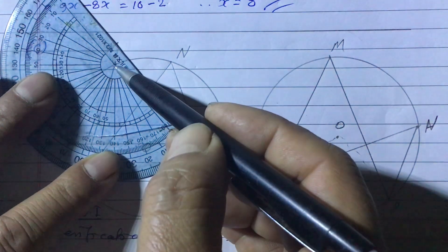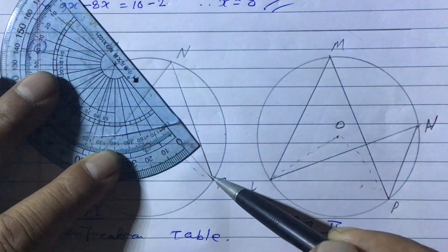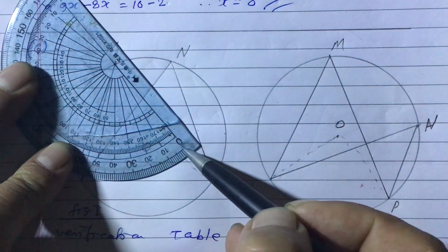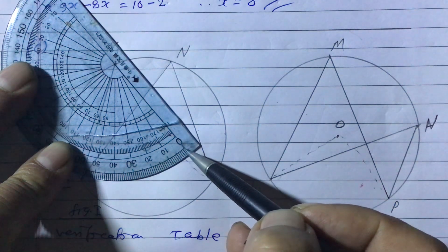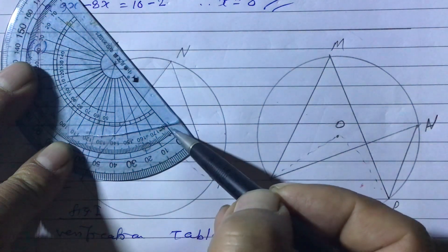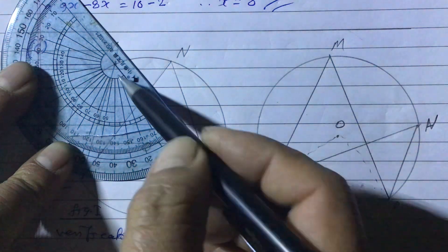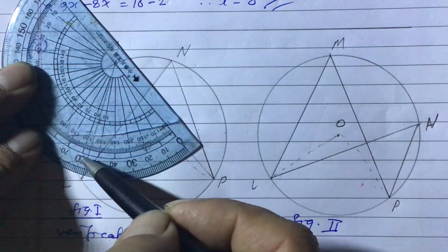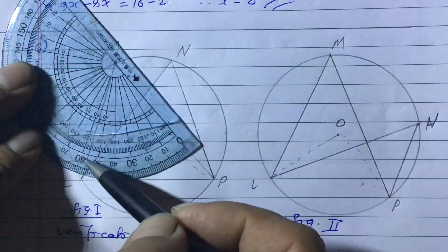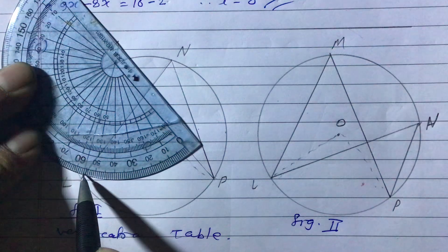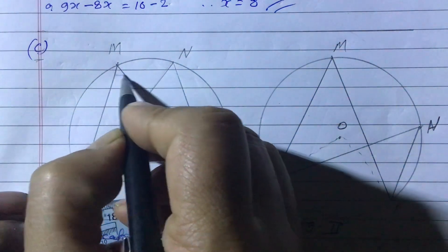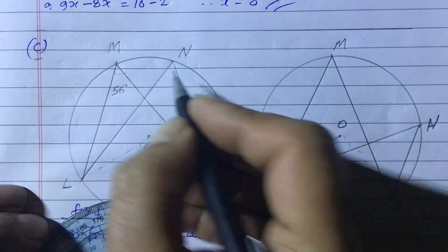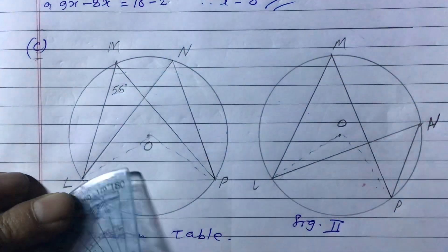Overlap the protractor baseline with line MP, keeping the center at vertex M. The zero is on the upper side, so count from zero upward: 10, 20, 30, 40, 50, 60 — our line is coming just before 60, at 55-56. So angle LMP is 56 degrees.